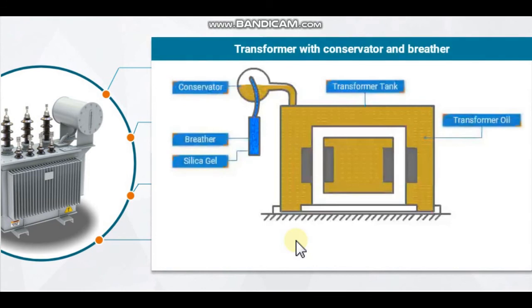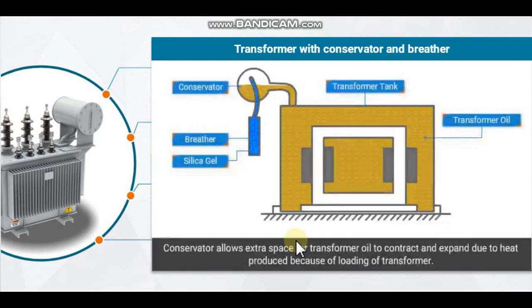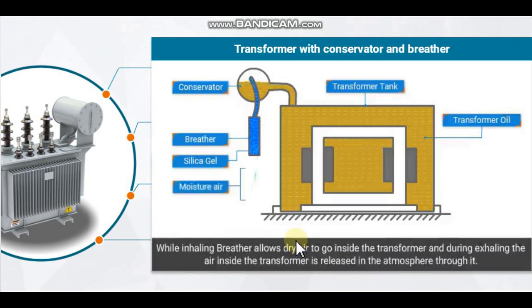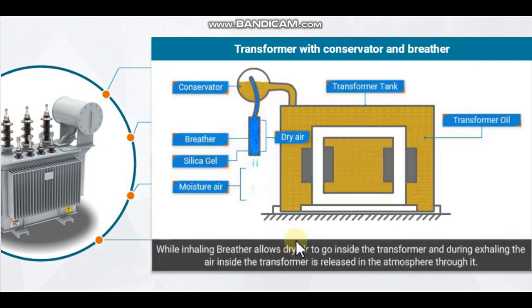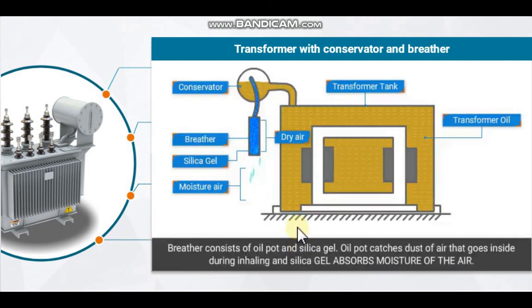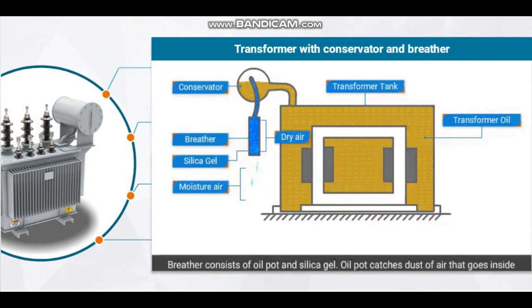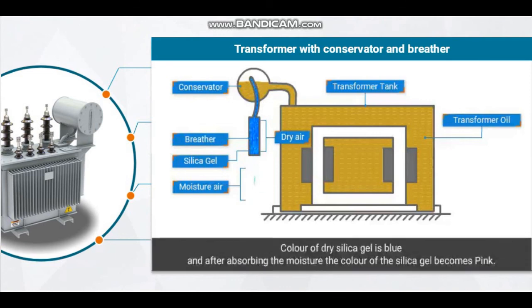Let's understand the working of the transformer with the conservator and breather. The conservator allows extra space for transformer oil to contract and expand due to heat produced because of loading of the transformer. While inhaling, the breather allows dry air to go inside the transformer, and during exhaling, the air inside the transformer is released into the atmosphere through it. The breather consists of an oil pot and silica gel. The oil pot catches dust from the air that goes inside during inhaling, and silica gel absorbs moisture from the air. The color of dry silica gel is blue, and after absorbing moisture, the color of the silica gel becomes pink.